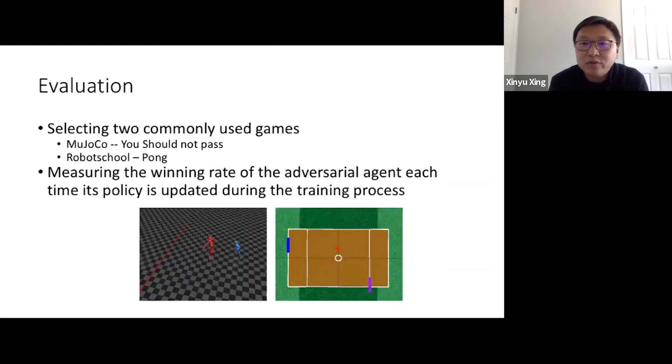In this work, we use two games to evaluate our work. In these two games, we use a regular reinforcement learning agent to control one player and use our adversarial learning approach to learn the other agent. To understand whether our adversarial attack is effective, we measure the winning rate of our adversarial agent against the regular agent and also compare our winning rate with the adversarial agent learned by using UC Berkeley's approach.